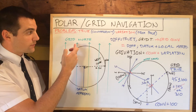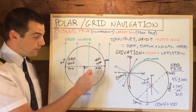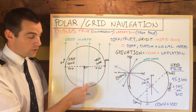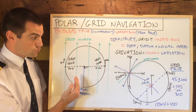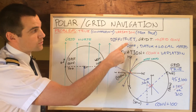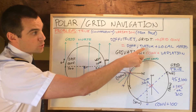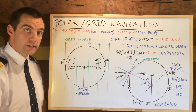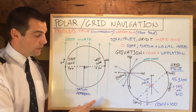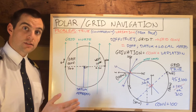As we're navigating, there's going to be a difference between our true track and our grid track. Our grid track we take from reference grid north, and our true track we take from true north, which will be varying depending on where we are. If we navigated this way, we would be on a constant grid track; however, our true track would be constantly changing. The difference between true track and grid track is called the grid convergence, and that is equal to the difference between the datum and the local meridian.